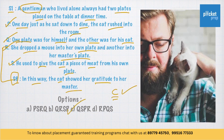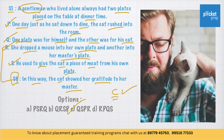The answer is C. Because a gentleman had two plates placed on his table at dinner time — one for himself and one for his cat. He used to give the cat a piece of meat from his own plate. One day when he sat down to dine, the cat rushed into the room and brought a mouse into her own plate and another into her master's plate. In this way the cat showed her gratitude to her master. Therefore Q, S, P, R — that is Option C — is the right answer.